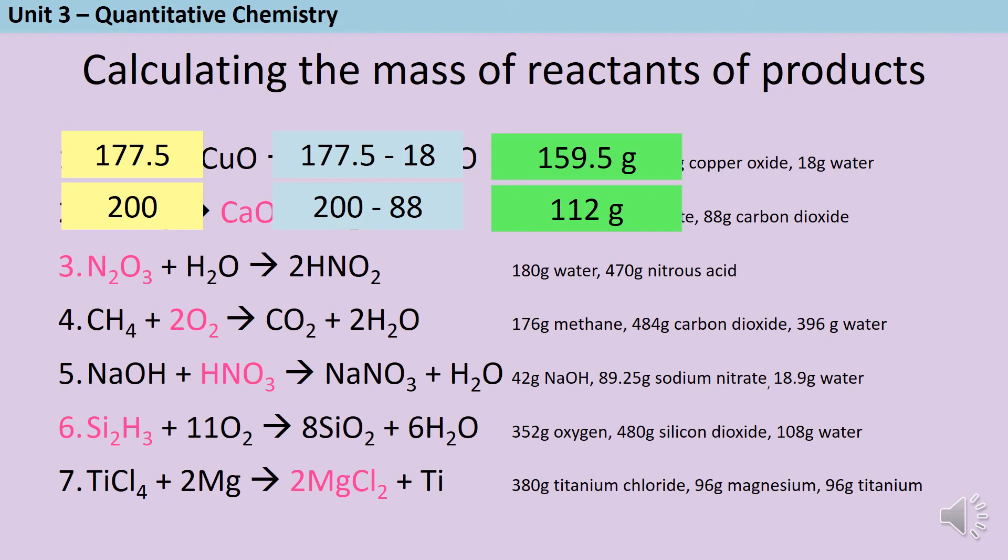For question number three, we need to mix things up slightly. So the nitrous acid has a mass of 470 grams and therefore on the left hand side it must also have a mass of 470 grams. So 470 take away the mass of the water leaves us with 290 grams.